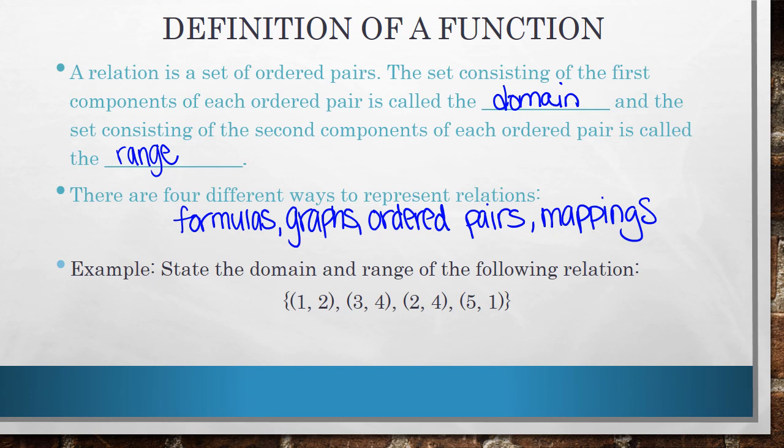For example, if you were asked to state the domain and range of the following relation, this is how you would write it. The domain is defined as the set consisting of the first components of each ordered pair. Notice that they use this word set. We're going to use set notation to actually denote the domain, which means we're using these little squiggly lines. So again, these were the first components of the ordered pairs. Another way to think about that is that they're the input values. So those values are 1, 3, 2, and 5. So we'll write those down.